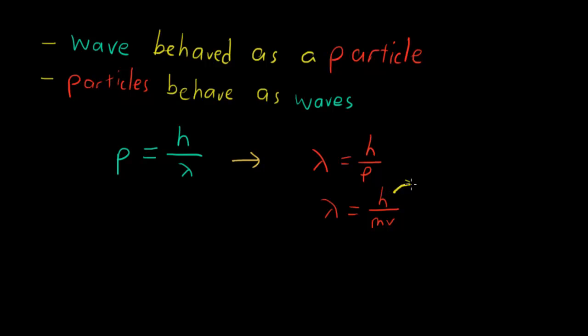This is because the value of h is really small - it's 6.63 times 10 to the negative 34. This is an incredibly tiny value. So let's say for a typical human, we have mass of like 70 or 80 kilograms, and we're moving at a speed of 1 meter per second.